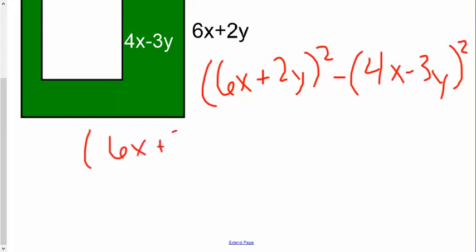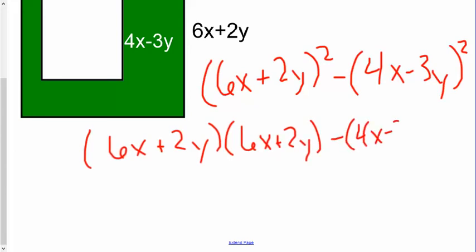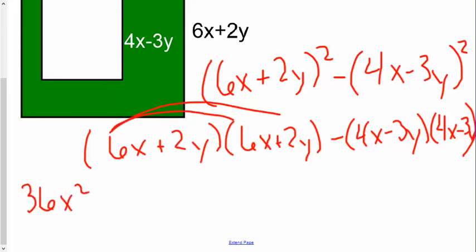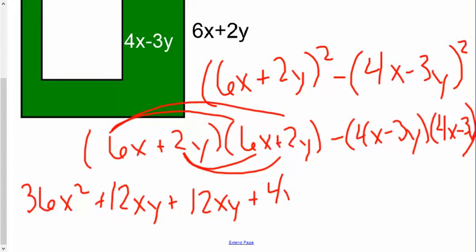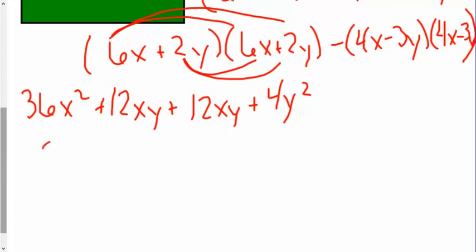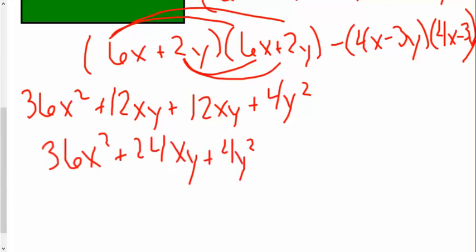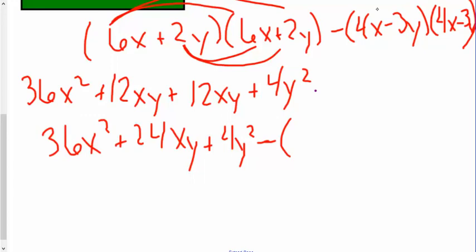I'm going to expand it — you may have learned about the special properties of a binomial squared, but especially starting out we really want you to still expand here. So foiling (6x + 2y)²: 6x times 6x is 36x squared, 6x times 2y is a positive 12xy, 2y times 6x gives me another 12xy, and 2y times 2y is 4y squared. Simplifying: 36x squared plus 24xy plus 4y squared.